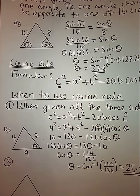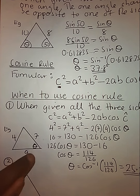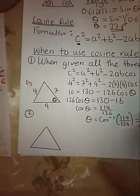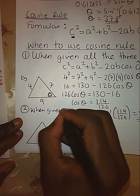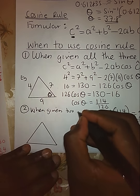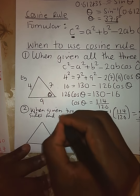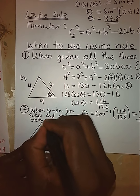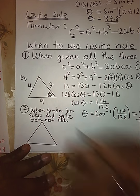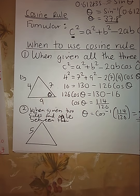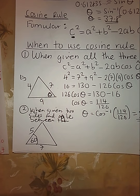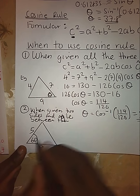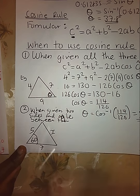That is the first situation where we can find an angle using the cosine rule. The second situation under which we can use the cosine rule is when given two sides and the angle between them. For example, if I have sides 5 and 7 with an angle of 60 degrees between them, I can find the side opposite to that angle using the cosine rule.